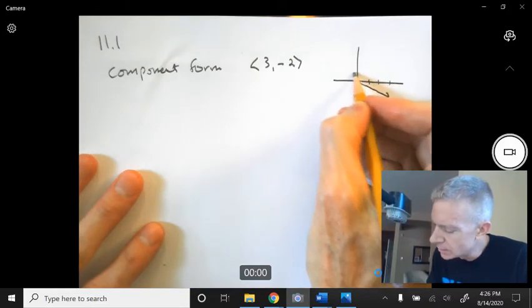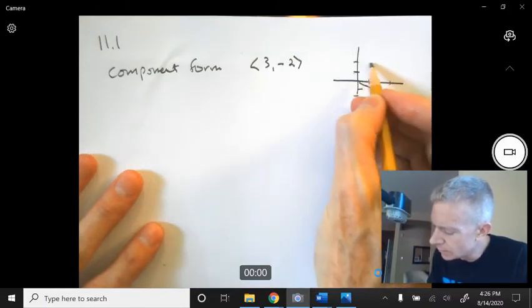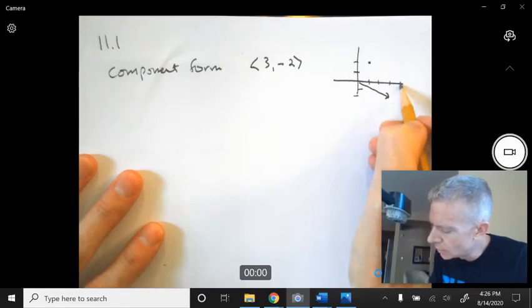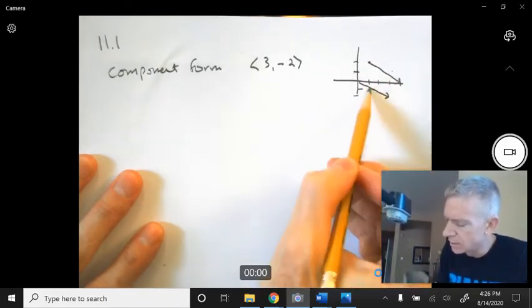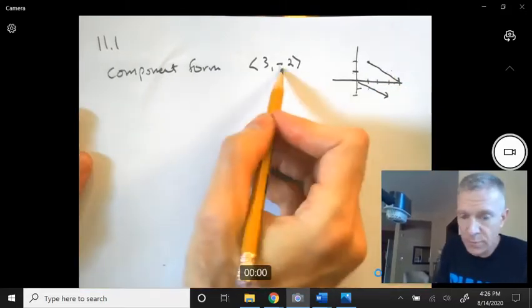I could draw the same vector. Maybe I want to start it here. It goes right 3 and down 2, and it would end here. It is the same exact vector. Standard position, not standard position. This is component form.